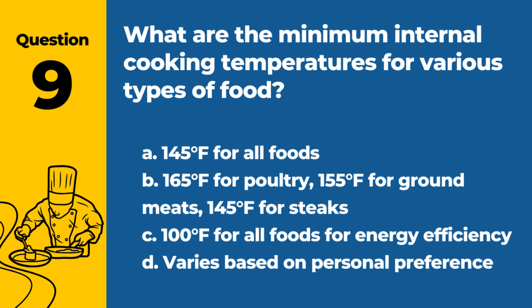Question 9. What are the minimum internal cooking temperatures for various types of food? A. 145°F for all foods. B. 165°F for poultry, 155°F for ground meats, 145°F for steaks. C. 100°F for all foods for energy efficiency. D. Varies based on personal preference. Answer: B. 165°F for poultry, 155°F for ground meats, 145°F for steaks. These are the minimum internal cooking temperatures recommended for different types of food to ensure safety.